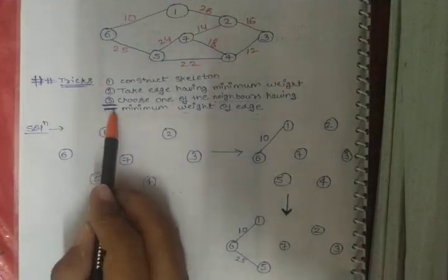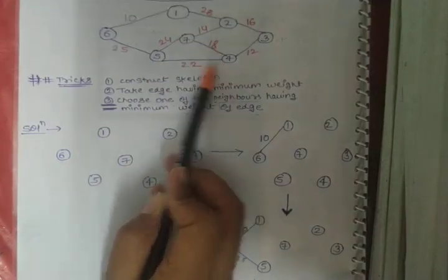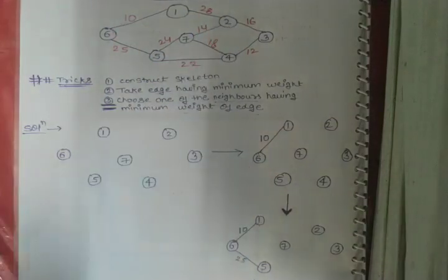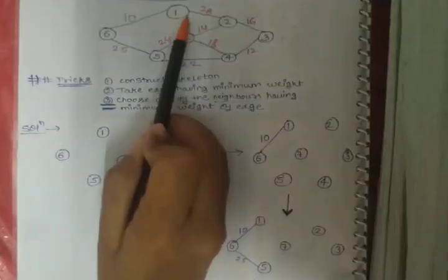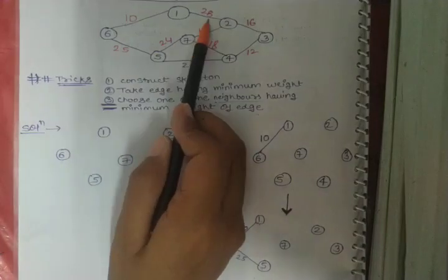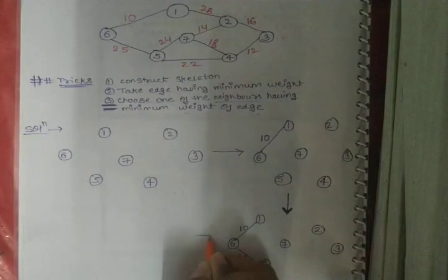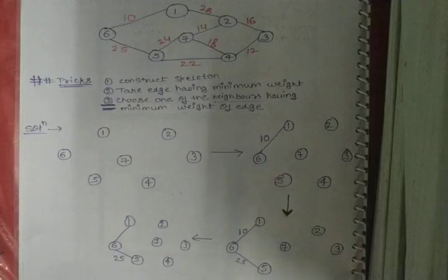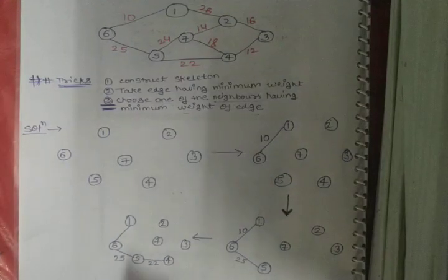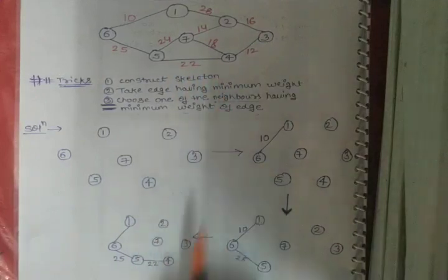We see the neighbors of nodes 1 and 5 now. The neighbor of node 1 is node 2, and the neighbors of node 5 are nodes 4 and 7. Node 1 has only one unvisited neighbor. The edge values are: node 1 to node 2 is 28, node 5 to node 7 is 22, and node 5 to node 4 is 24. The minimum among 22, 24, and 28 is 22, so we select that edge.